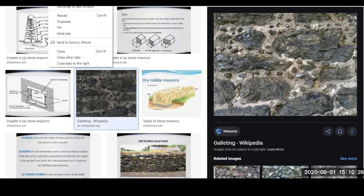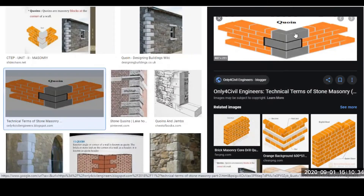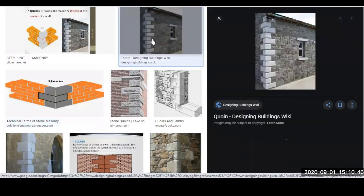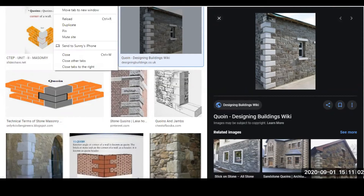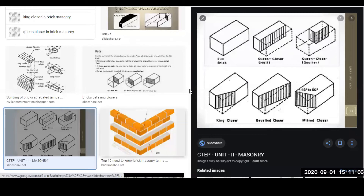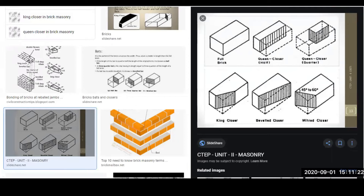Next we have 'quoins,' which are stones used for the corners of walls or structures. Let me show you how they look — these are known as quoins. Then we have 'bat,' which is the portion of a brick cut across its width. Let me show you how a bat looks.